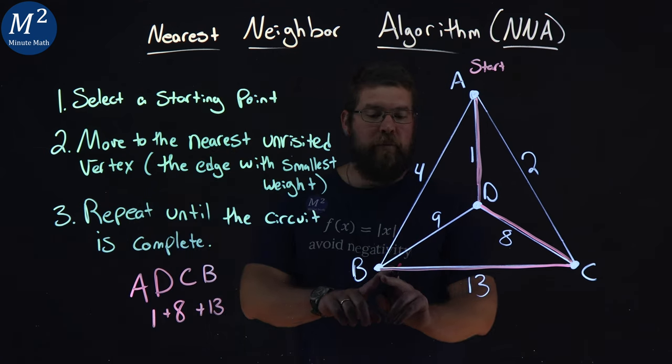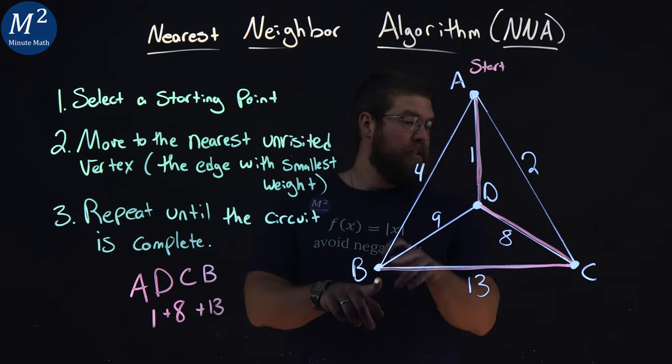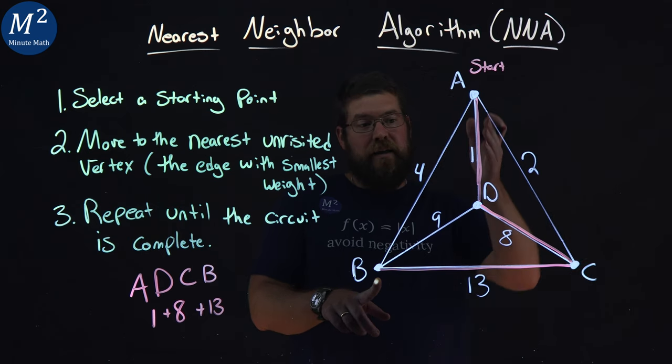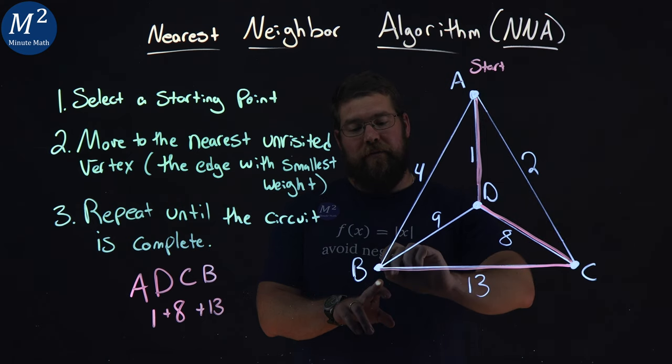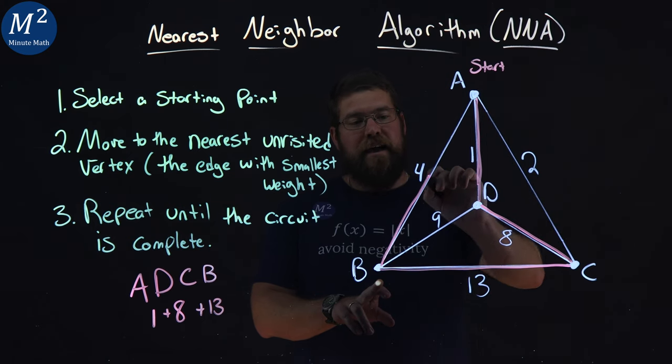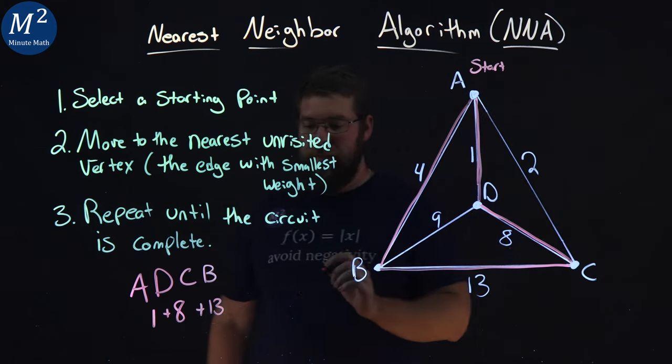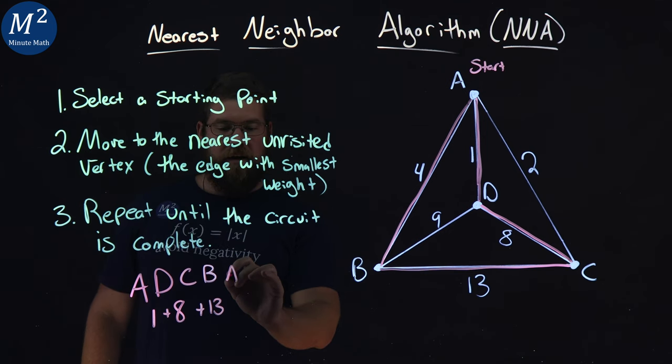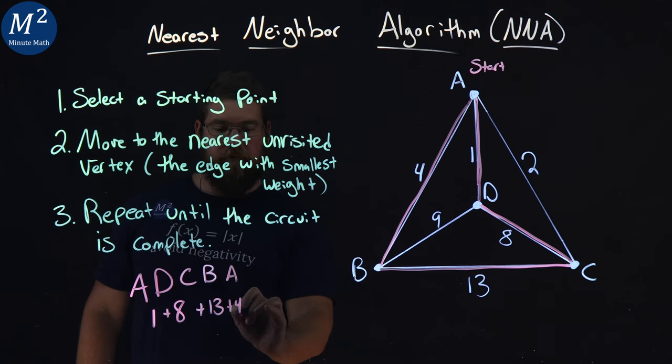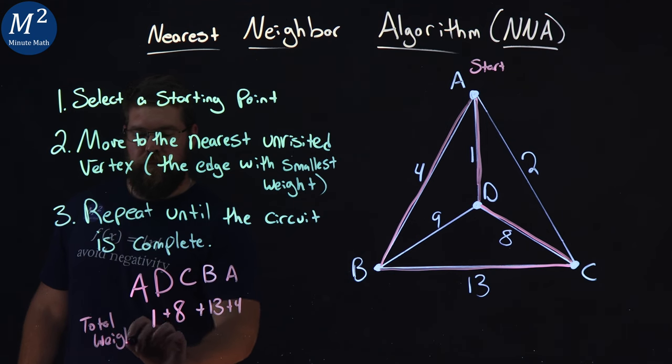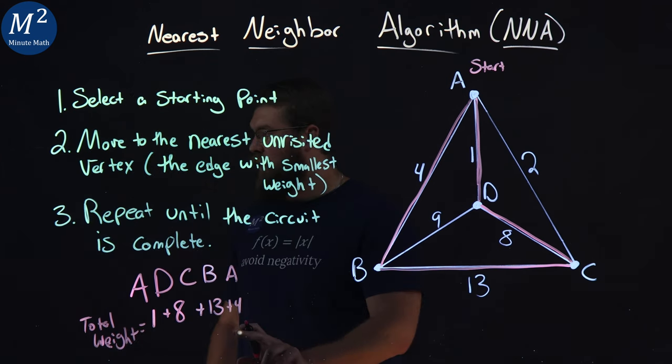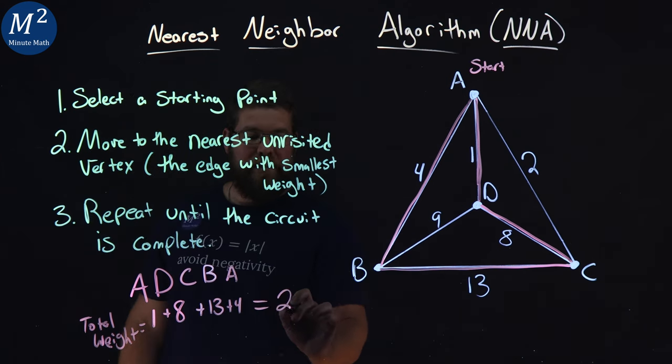And then from B, the only unvisited vertex will be really back in the beginning because every single vertex we have visited. So now we can complete the circuit. I have to go back to A right there. And we have A here, and that's a plus 4. And so our total weight here is 1 plus 8 plus 13 plus 4, which is 26.